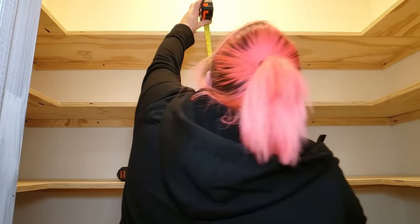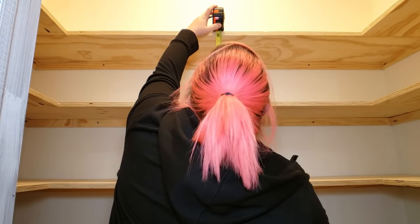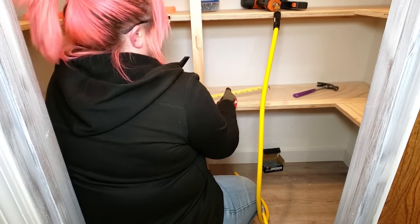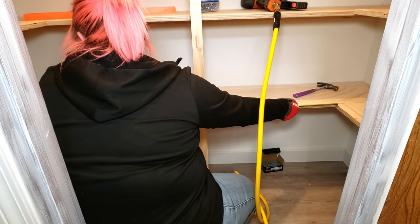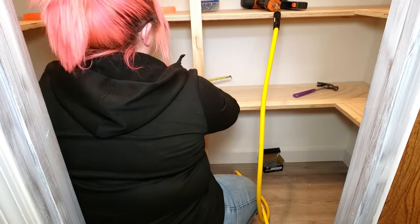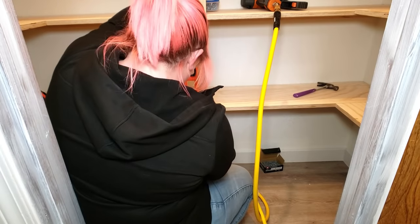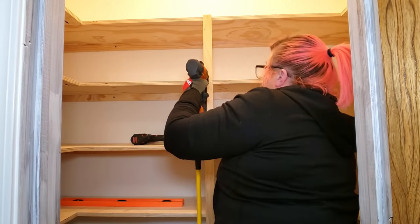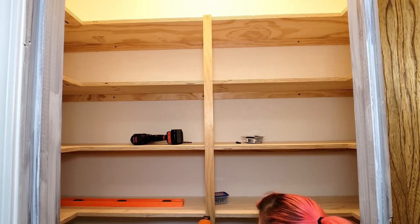With the shelves in place, I double checked the measurements for my support bar and I cut it to size. Then I made sure that it was perfectly centered in front of that back shelf. Then I used my level and my nail gun and secured it in place, attaching it to every single one of the shelves.